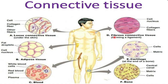Fibrous connective tissue falls under dense connective tissue. The example of ligament is given here — the ligament attaches one bone to another. The collagen fibers are regularly arranged and the cells are embedded within them.